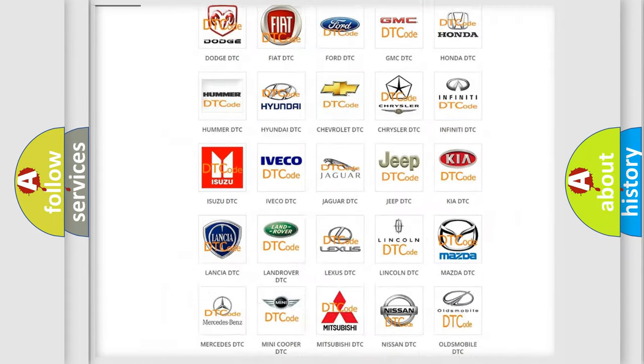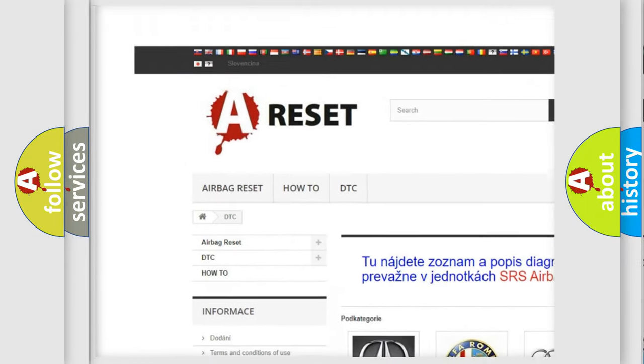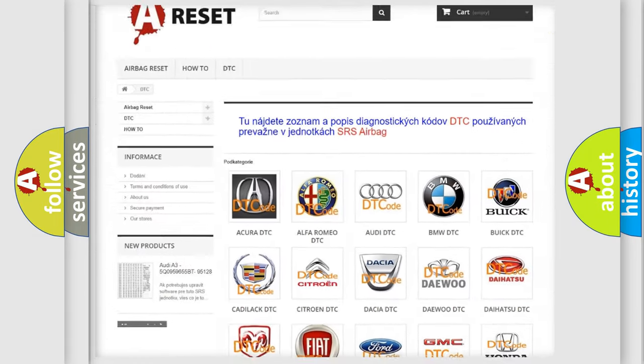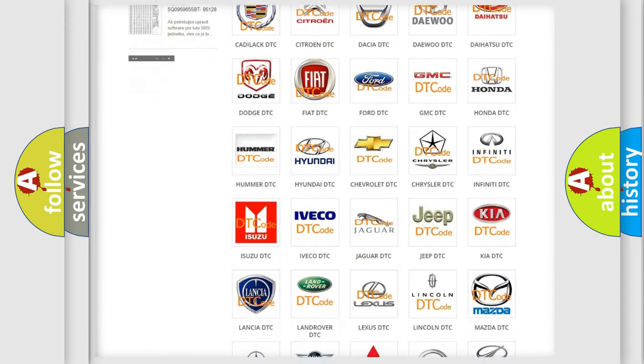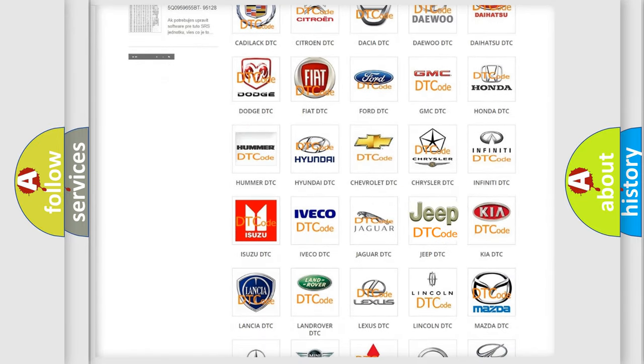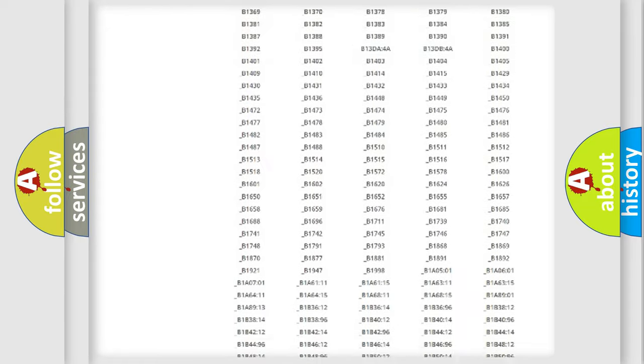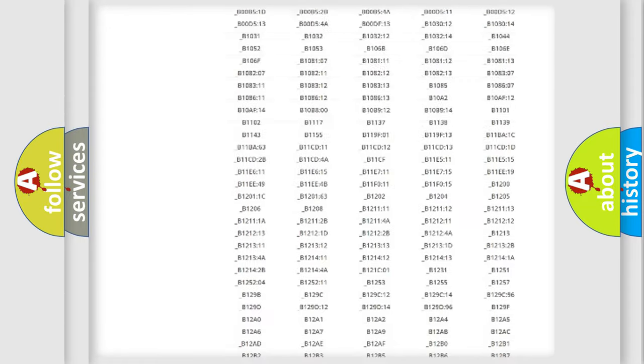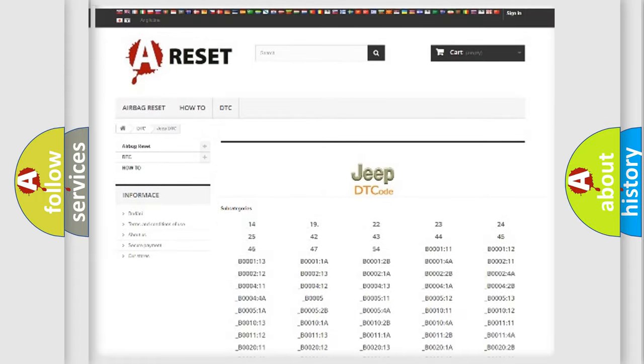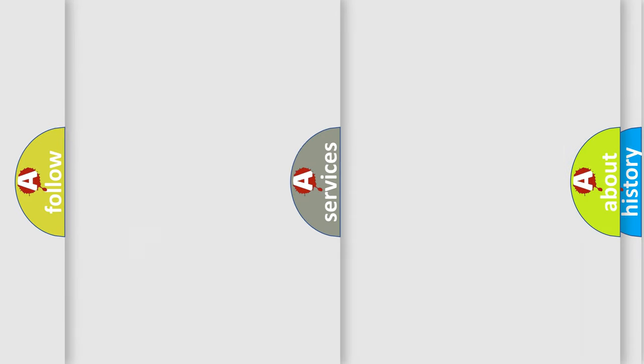Our website airbagreset.sk produces useful videos for you. You do not have to go through the OBD2 protocol anymore to know how to troubleshoot any car breakdown. You will find all the diagnostic codes that can be diagnosed in Jeep vehicles, and many other useful things.